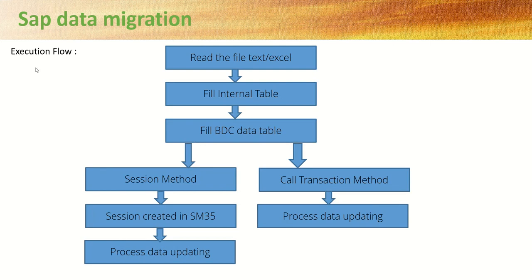The execution flow for BTC is shown with this diagram. First, we have to read the Excel or text file, and after reading it, we will get all data into an internal table. With the internal table data, we can make a loop and fill the BTC data table. Based on our method — whether Call Transaction or Session method — if it is Call Transaction, the system will process all records at the same time. With the Session method, the system will create a session using the BTC data. Then we can see it in SM35, and whenever we need to process, we go to SM35 and process that session.